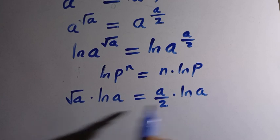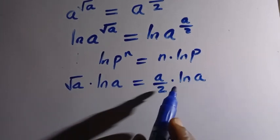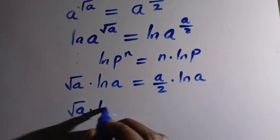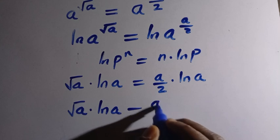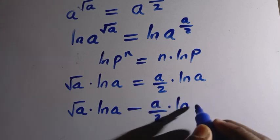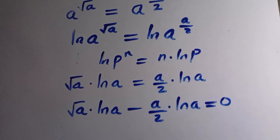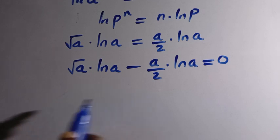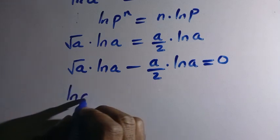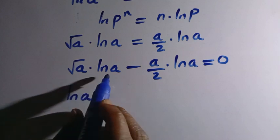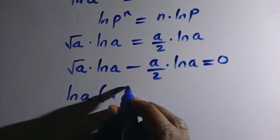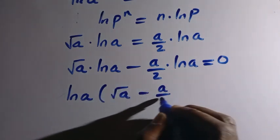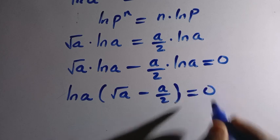We cannot cancel ln a directly here, so we bring everything to one side. We have square root of a times ln a minus a divided by 2 times ln a equals 0. Since ln a is common to both terms, we factor it out, leaving ln a times the quantity (square root of a minus a divided by 2) equals 0.